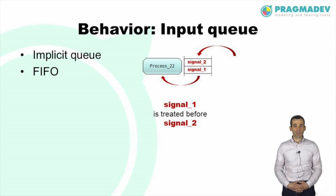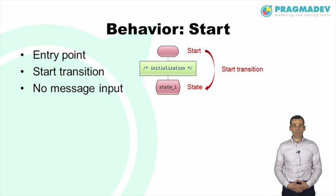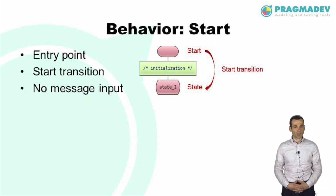For example, if signal 1 is on top of the queue it will be treated first, followed by signal 2. The start symbol is the entry point of a state machine. The transition between the start symbol and the first state of the process is called the start transition. During this transition the process cannot treat messages. All other symbols are allowed.